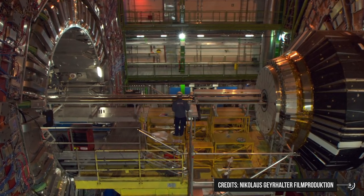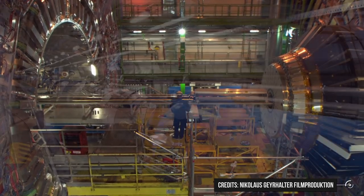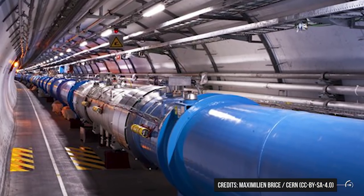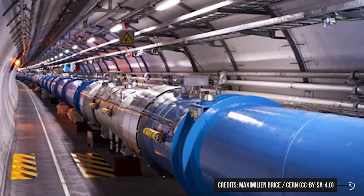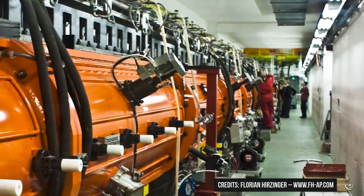In fact, particles tend to go straight normally, not in a circle. Without any additional system, these protons would quickly crash against the walls of the ring. So how to keep them in a circular trajectory?